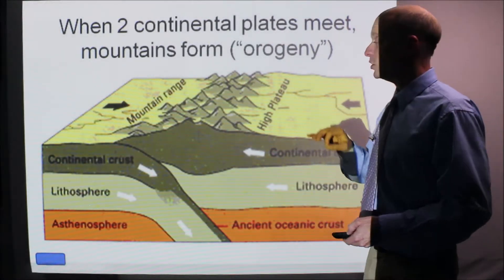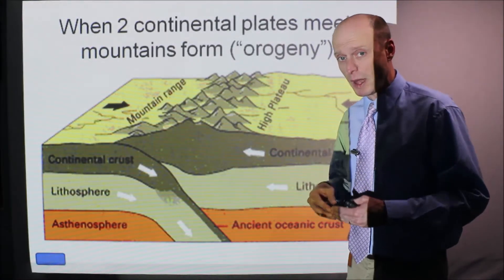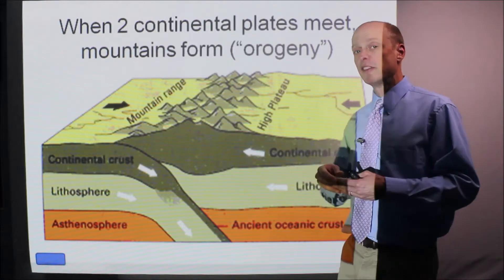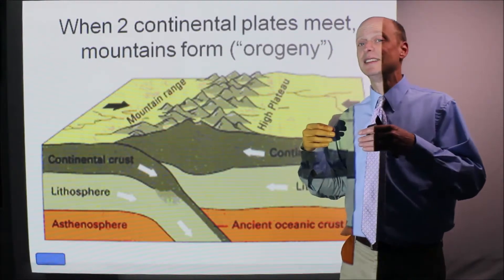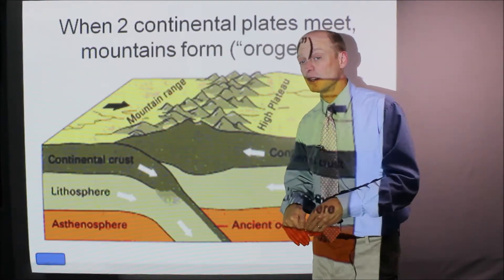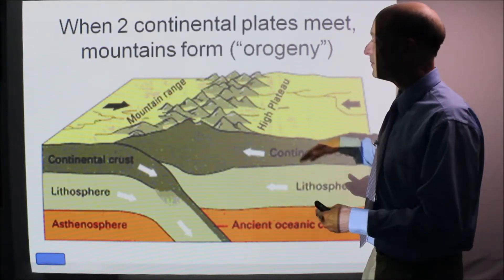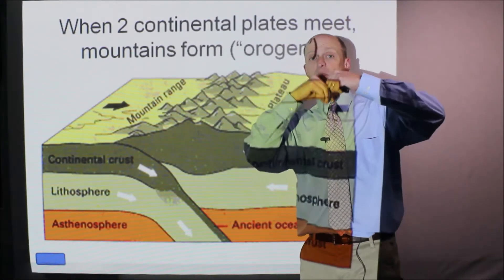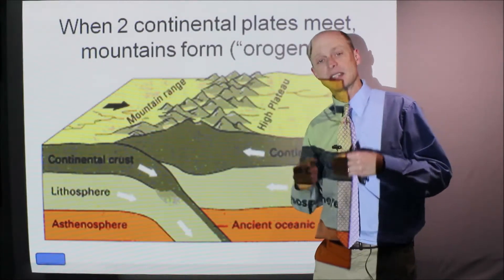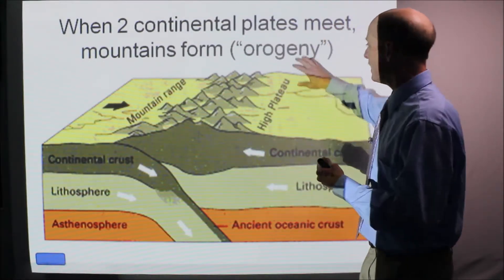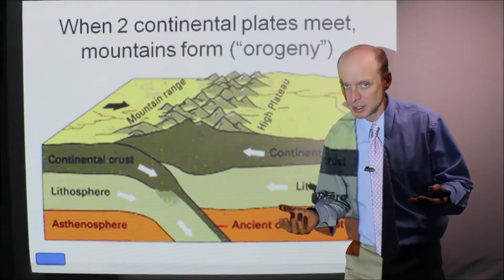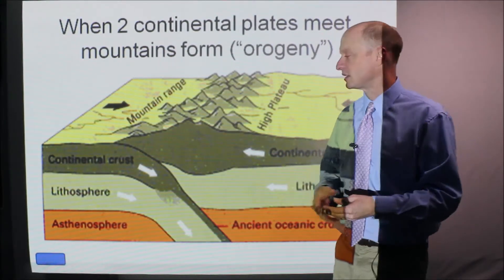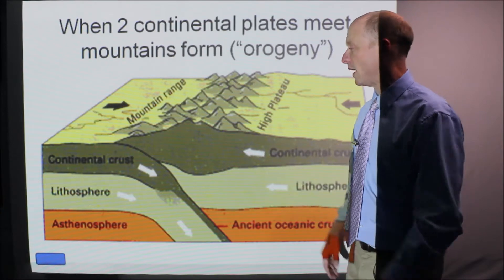Now you can have two continents come together as well. And in that case, both of them have density about 2.7 and they're not going to subduct in that case. And what you get is you get mountains, mountains forming, they kind of fold and buckle and go upwards. And that's how we get the big mountain ranges of this earth. And that's called orogeny, by the way. Sometimes that comes up on the Regents exam. Orogeny is the process of mountains being built this way.